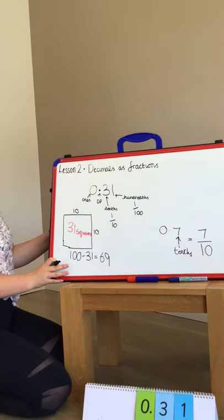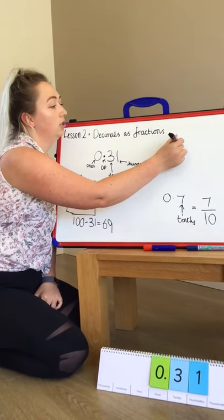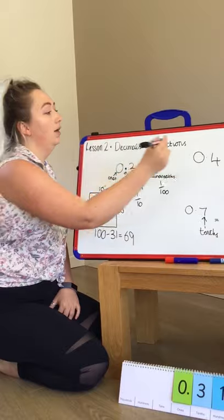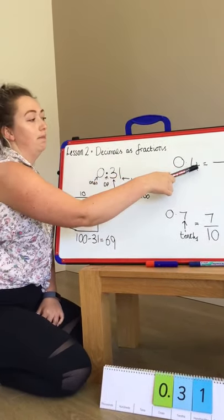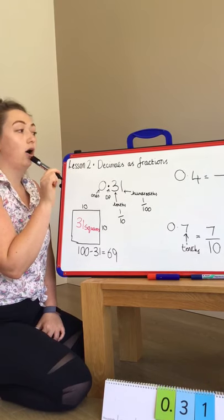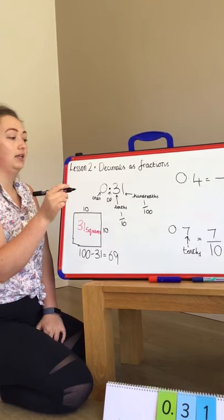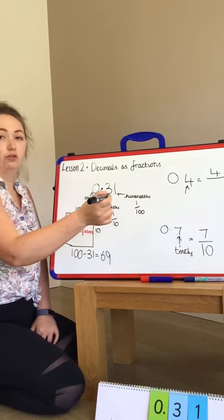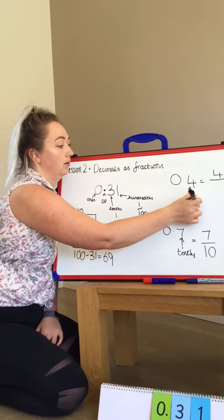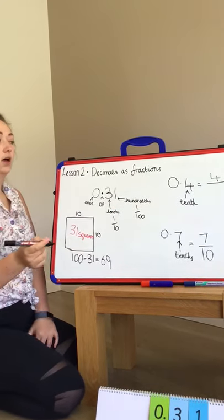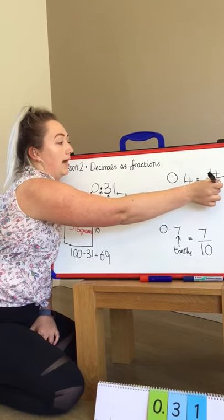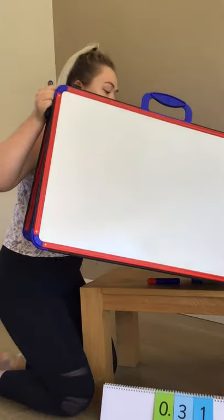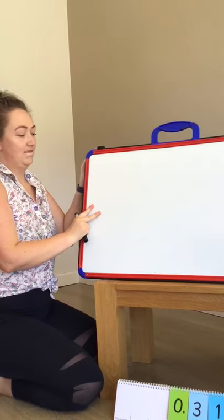So we're going to do one couple more. If we had the number 0.4, which number, and if we're trying to make it as a fraction, which number tells us how many are shaded in year five? Which number tells us how many are shaded in? Super, it's our four. Because what is our four representing? Just to remind us, it's our tenth. So what is our denominator? Fantastic, we have got ten parts. Right, let's go on to the next board.